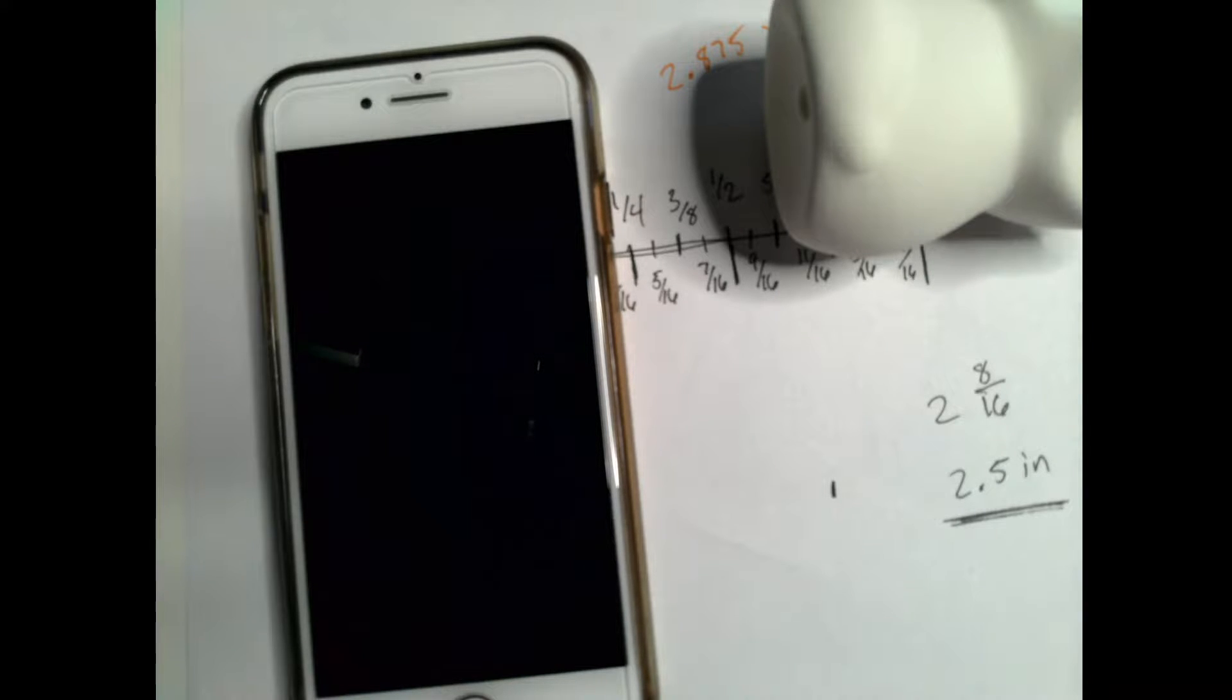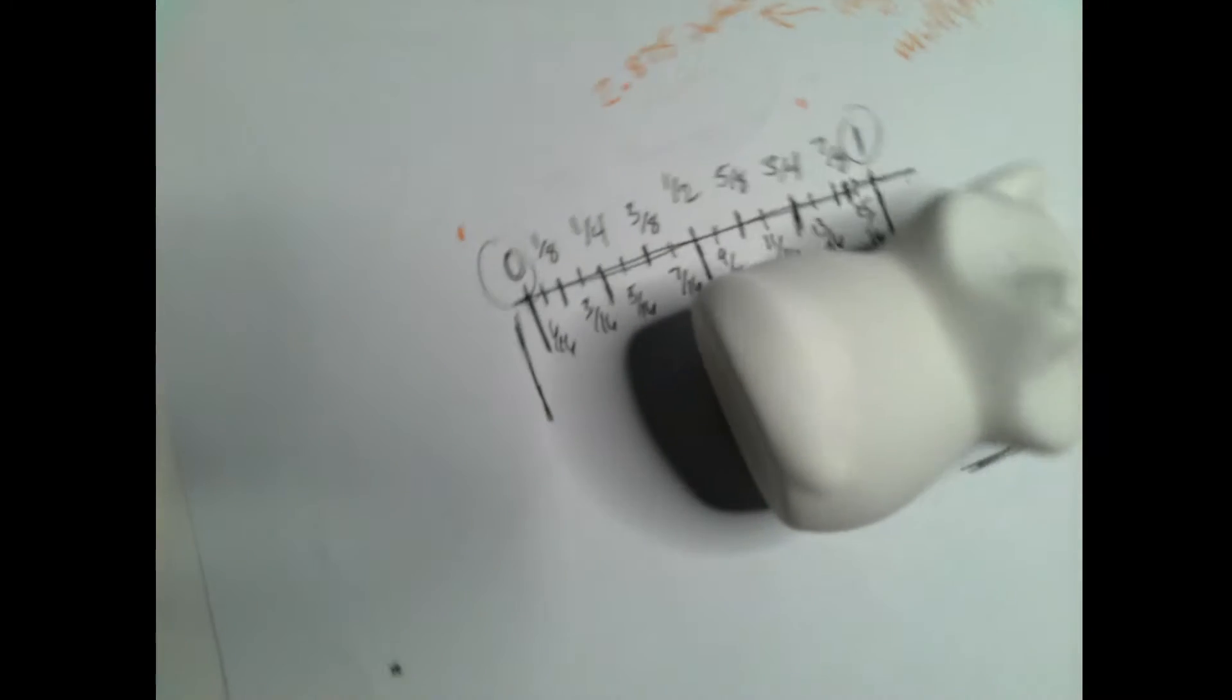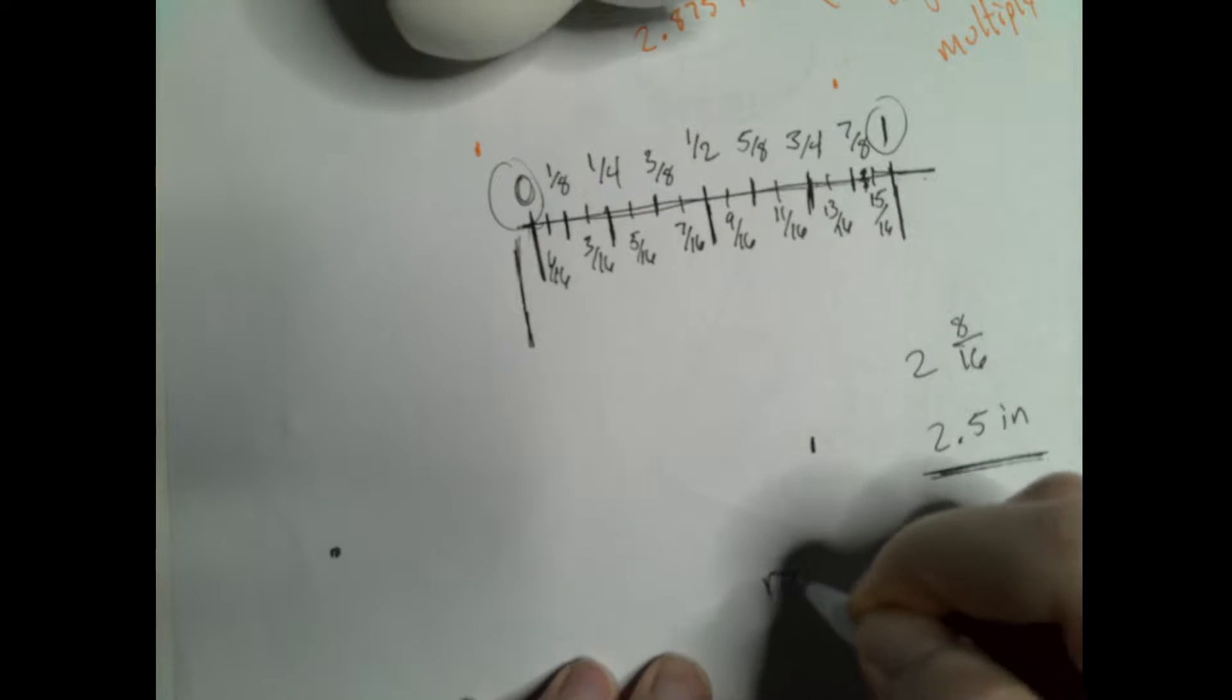Once you have your length, whatever the longest is, once you have that length, what we need to now find is called a ratio.